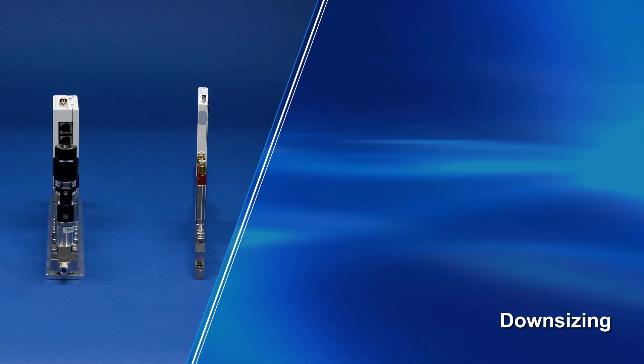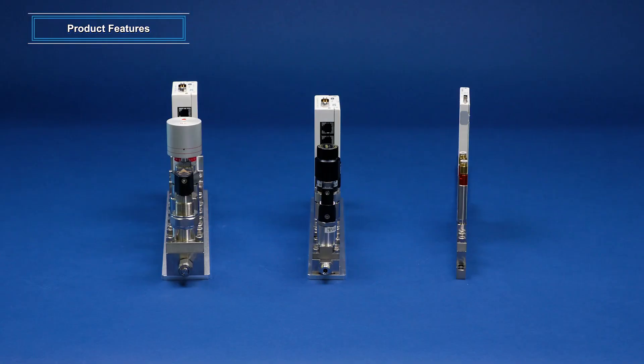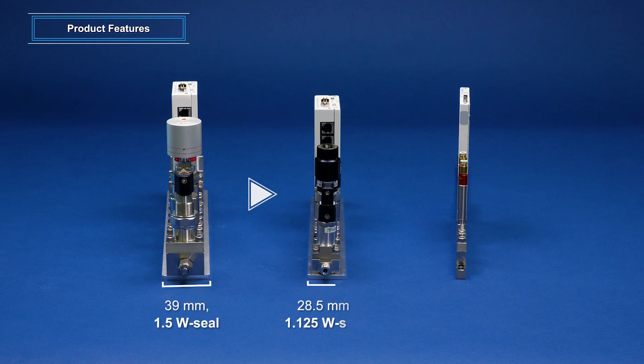Downsizing: We started gradual downsizing from the previously developed 1.5W Seal type IGS, and the most recent model, a 1W Seal IGS, is 10 mm in width, about one-quarter of the 1.5W Seal width.